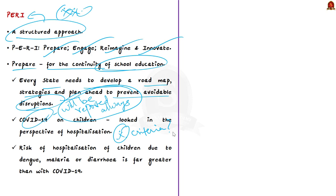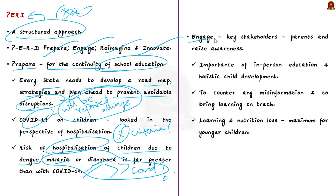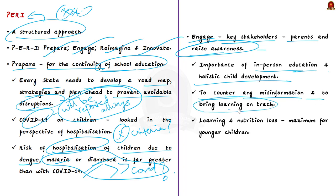The impact of COVID-19 on children should be assessed in the perspective of hospitalization. The risk of hospitalization due to dengue, malaria, or diarrhea is far greater than with COVID-19 — so why close schools for COVID-19 if we don't for those conditions? The second element, 'Engage,' means engaging with key stakeholders including parents and raising awareness about the importance of in-person education and holistic child development, mainly to counter misinformation and bring learning on track.